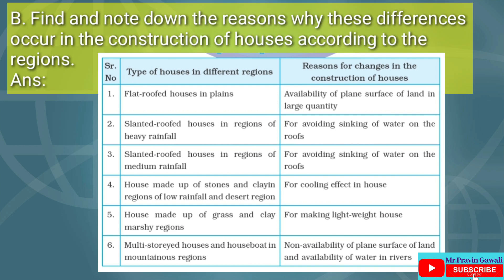Question B, given on page number 53: Find and note down the reasons why these differences occur in the construction of houses according to the regions. In the first column, the type of houses in different regions is given. In the second column, reasons for changes in the construction of houses is given.